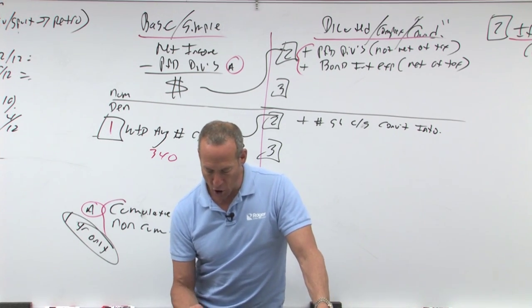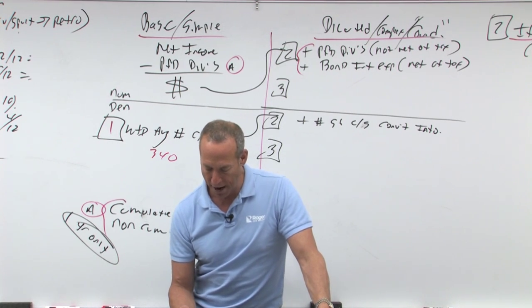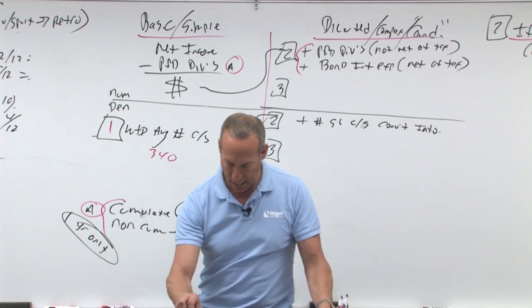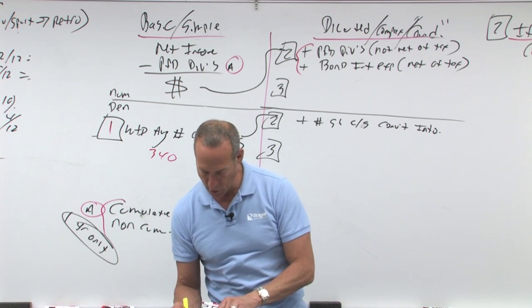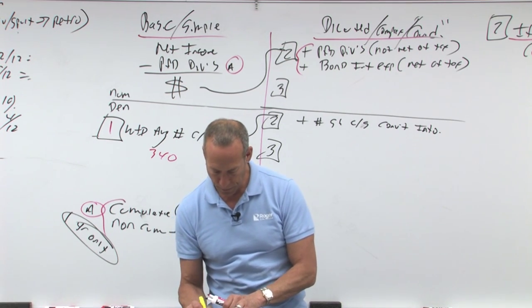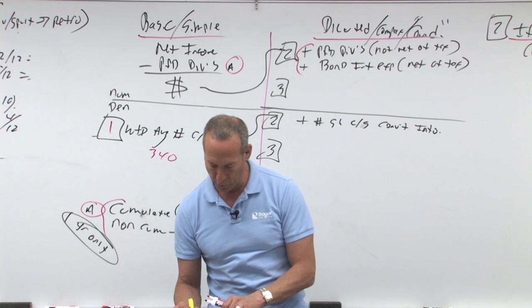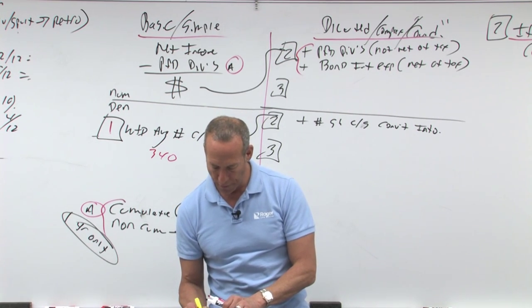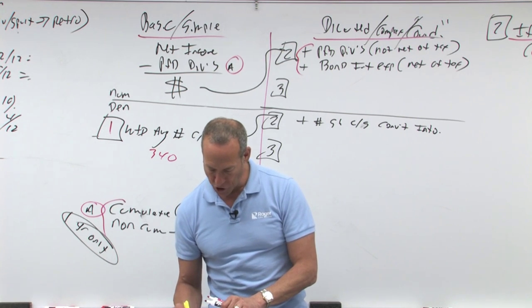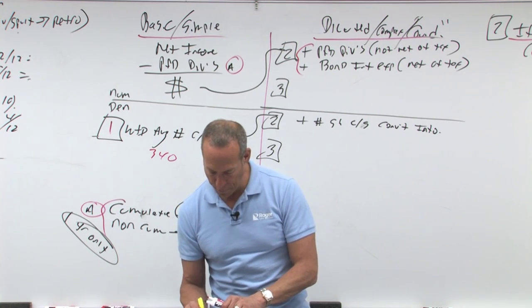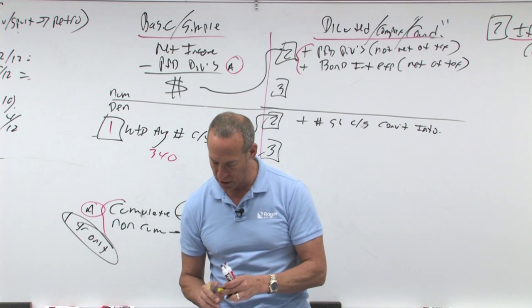In the numerator, earnings are increased by dividends or after-tax interest that would not have been due if securities had been converted. So, dividends or after-tax interest. The denominator, shares are increased by the additional number of common shares that would have been outstanding if they had been converted. The convertible preferred assume had been converted at the beginning of the period or at time of issuance, whichever is later.